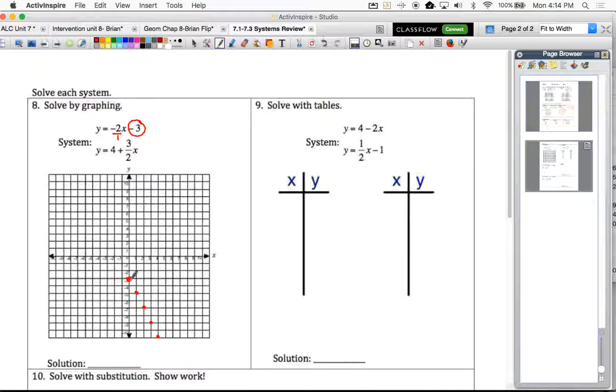If you're using a straight edge, that certainly helps. But if not, then we definitely want to graph some points here so we can make sure that we can see very precisely where these two lines are going to cross.